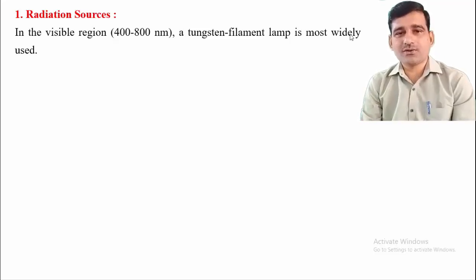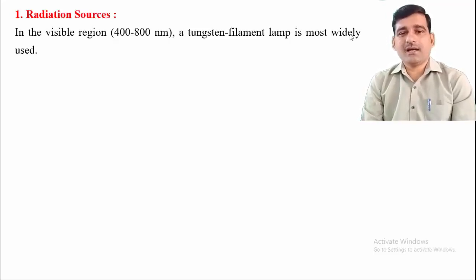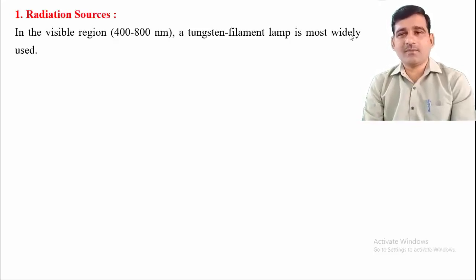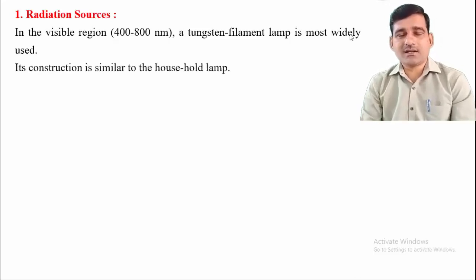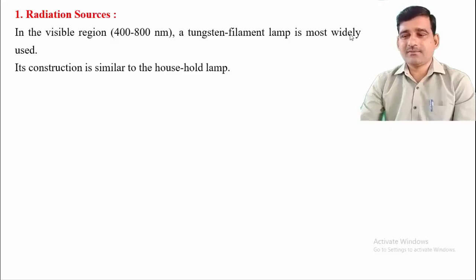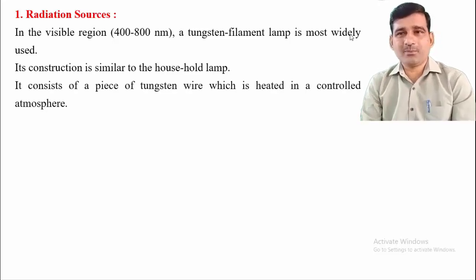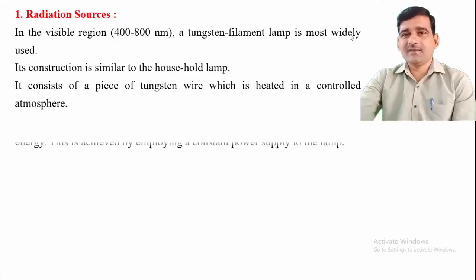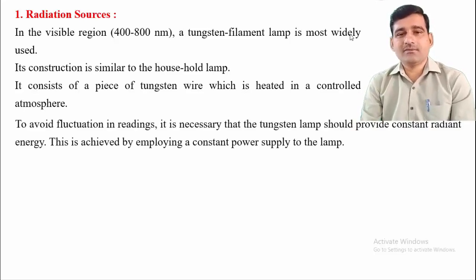The tungsten filament lamp provides light in the range 400 to 800 nm and is most commonly used for the visible region. Its construction is very similar to a household lamp. It consists of a piece of tungsten wire heated in a controlled atmosphere inside an evacuated glass bulb, where two rods are connected by the tungsten wire. When the wire is heated, it provides light in the visible region.